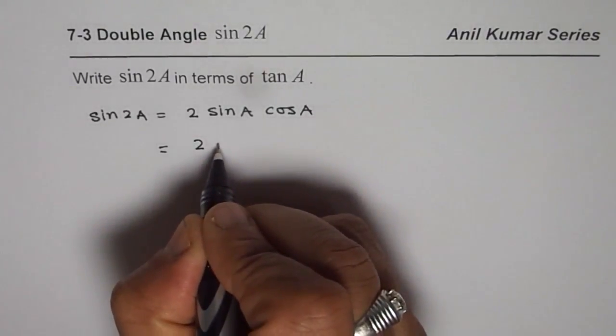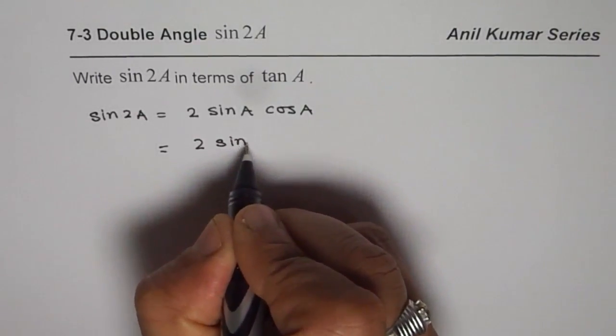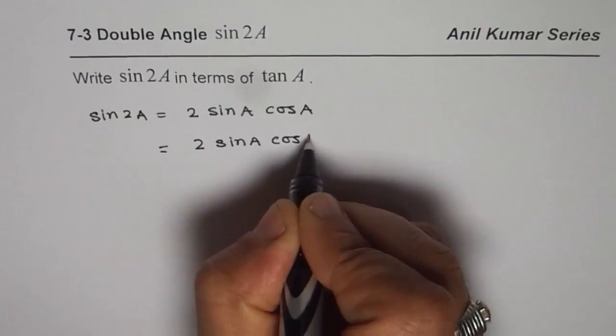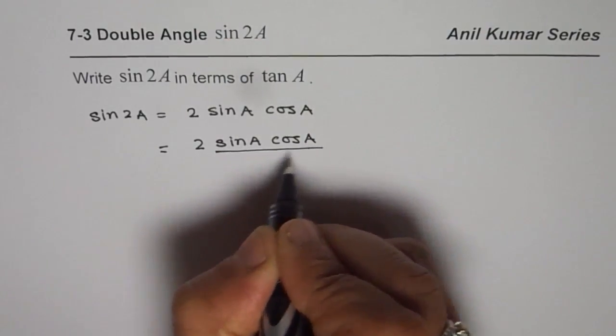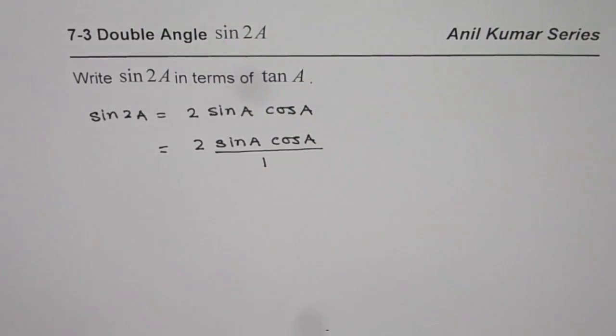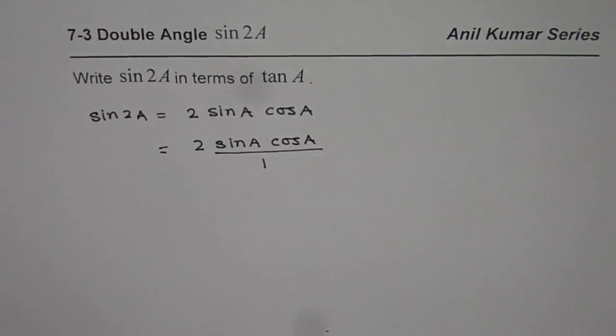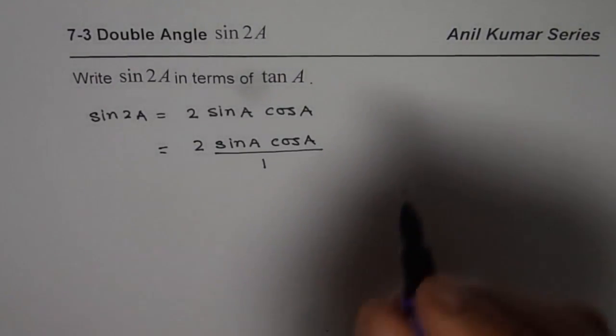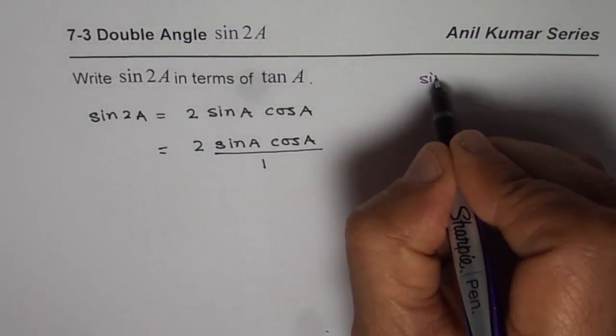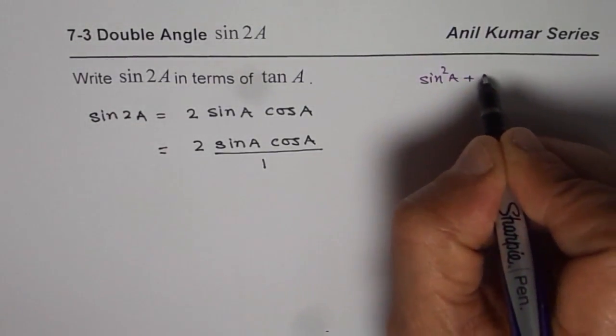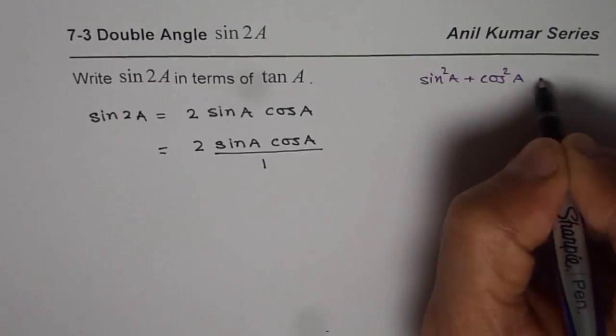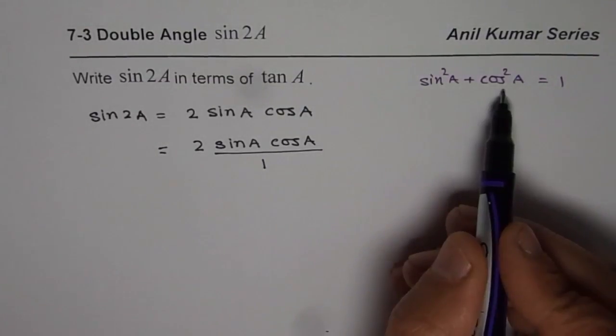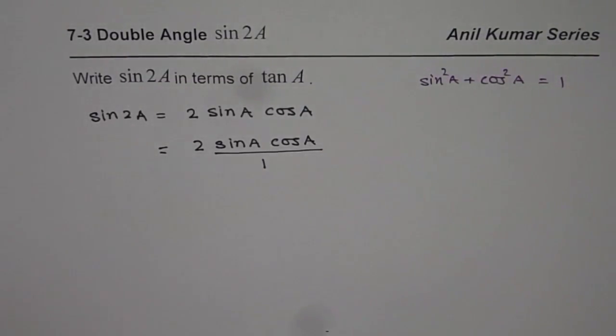We can think about this expression to be as sine of A cos of A divided by 1. I am writing it divided by 1 so that I can give you an idea how to solve similar questions. 1 could be written as sine square A plus cos square A is equal to 1, right? Substitute this here and see what do we get.